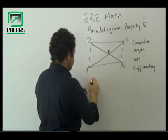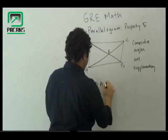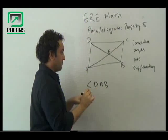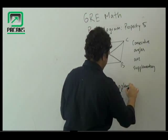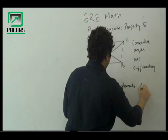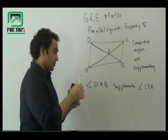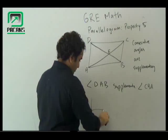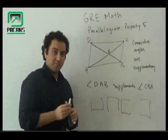So if we have an angle which is angle DAB, it is going to be supplementary to angle CBA. So all those angles which are going to be forming a U or C would all be supplementary.